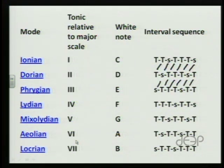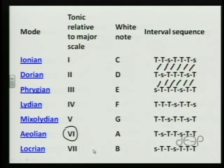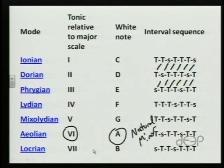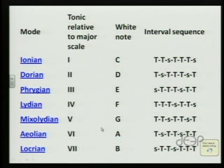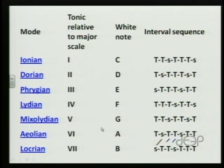Hopefully at this point you're starting to get the idea. The Lydian mode begins on the fourth step of the major scale. The Mixolydian mode begins on the fifth step of the major scale. The Aeolian mode begins on the sixth step of the major scale — and you ought to be looking at that going, well, I know the Aeolian mode: it is the same as natural minor. Whole, half, whole, whole, half, whole, whole — that ought to really resonate for you. The Locrian mode starts on the seventh step of the major scale, and on the white keys that would be B. The whole step/half step pattern continues to shift to the left.